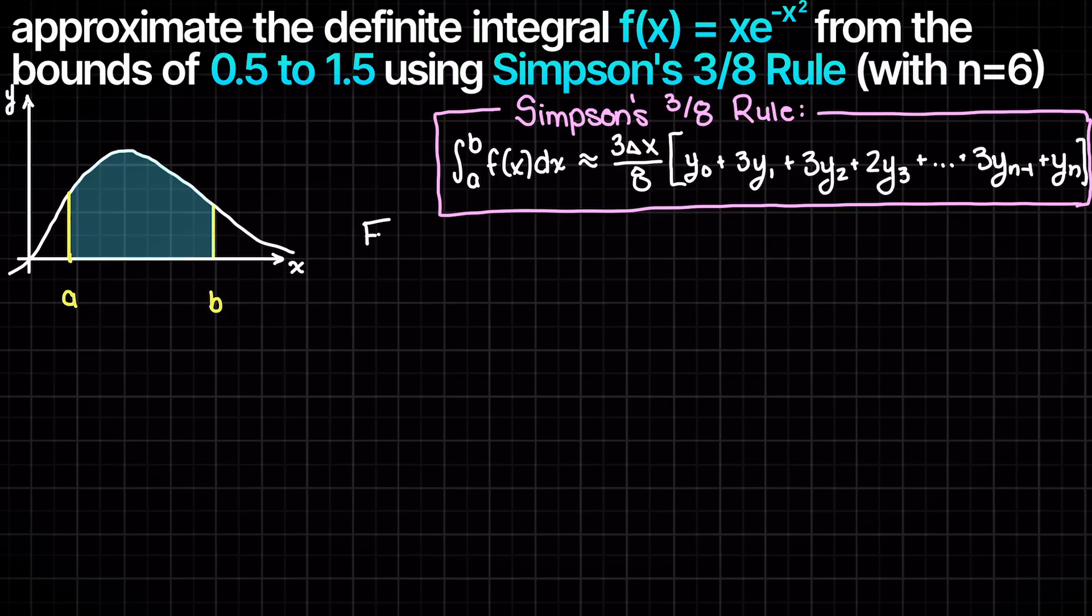Let's now calculate our step size. We know that we want 6 equally spaced intervals because we are told so in the problem statement. Therefore, we are going to have step sizes of (b-a)/n, which is our upper bound 1.5 minus our lower bound